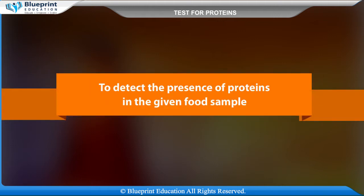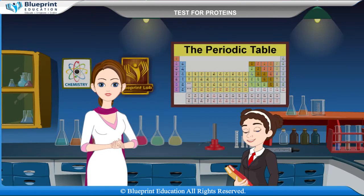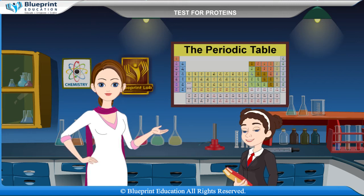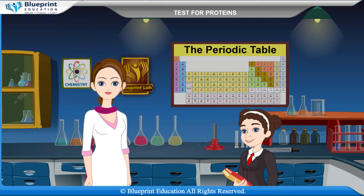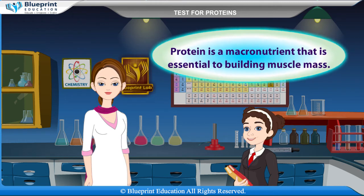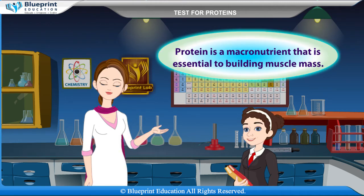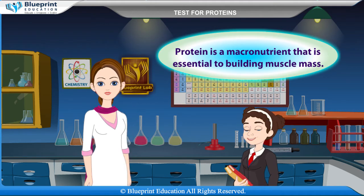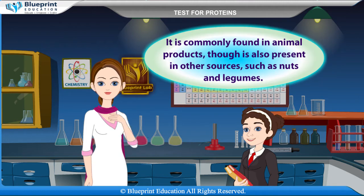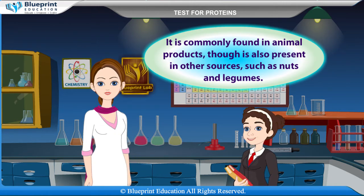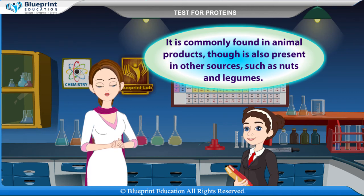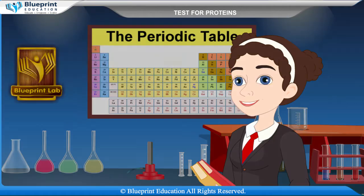To detect the presence of proteins in the given food sample. Protein is a macronutrient that is essential to building muscle mass. It is commonly found in animal products, though it is also present in other sources such as nuts and legumes.